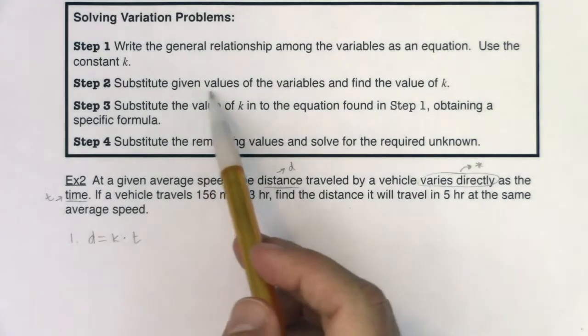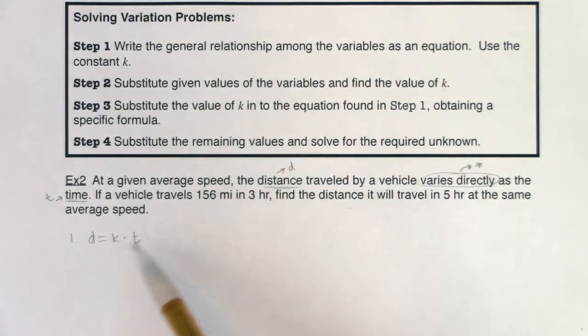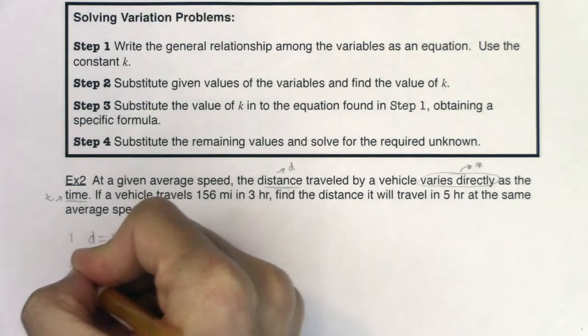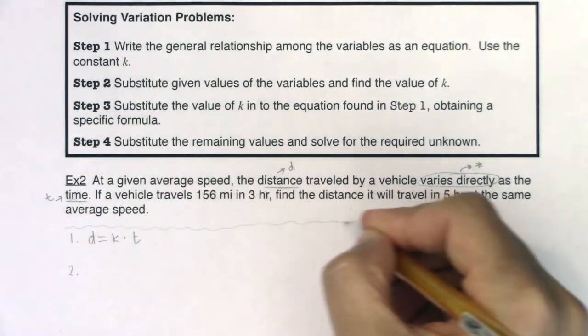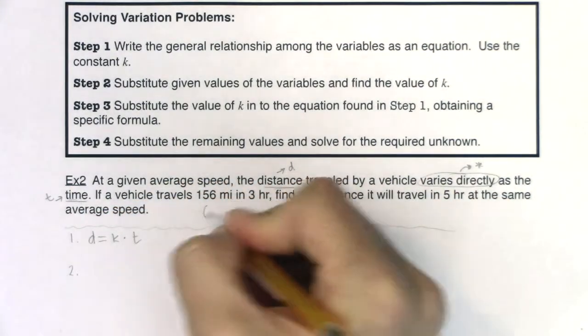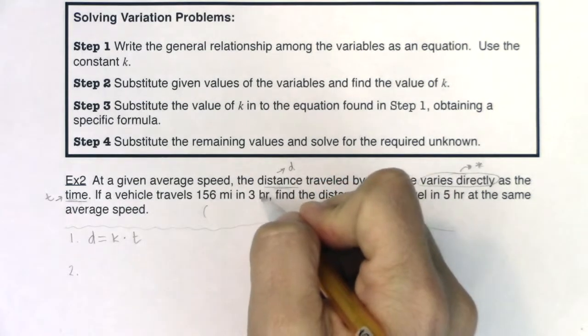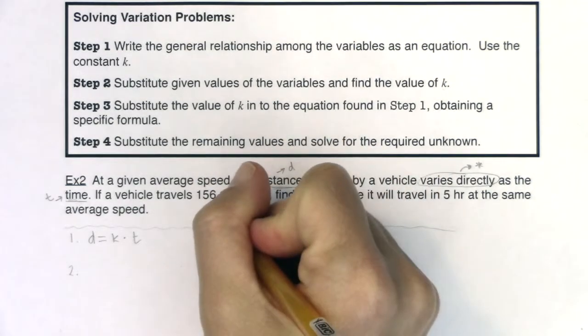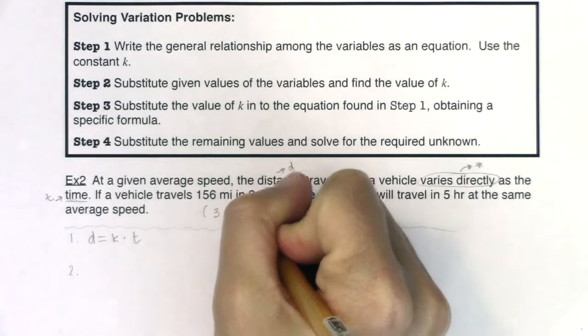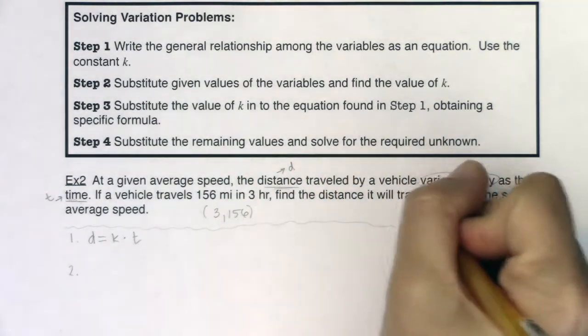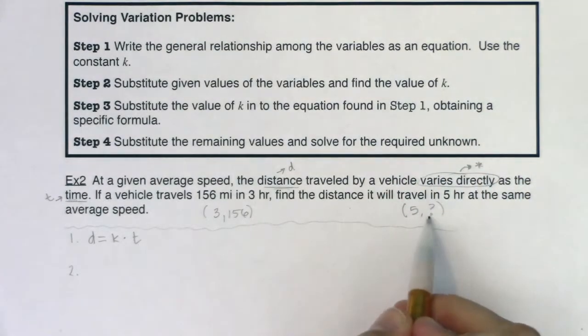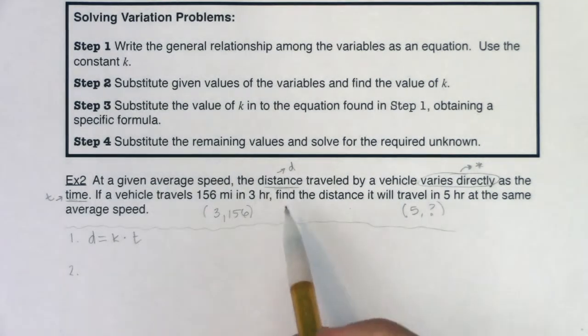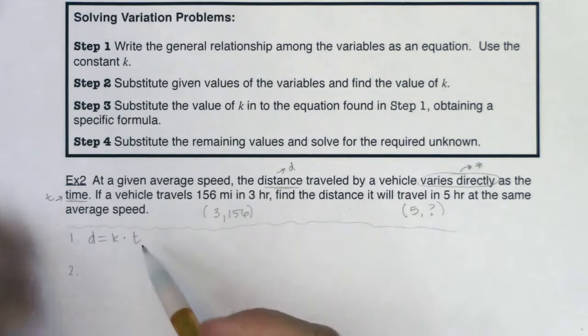Now it says substitute given values of the variable to find the value of k. So for step two, if we really want to break this down, we're going to start subbing in these values. Now let me put a little separation squiggles. Here I can fill out an ordered pair. Be careful, T is the independent variable, so this is the ordered pair three comma 156, and this one is five comma I don't know. They say find the distance, so I don't know the Y value or the distance value for that ordered pair. So use the complete ordered pair so we can solve for k.